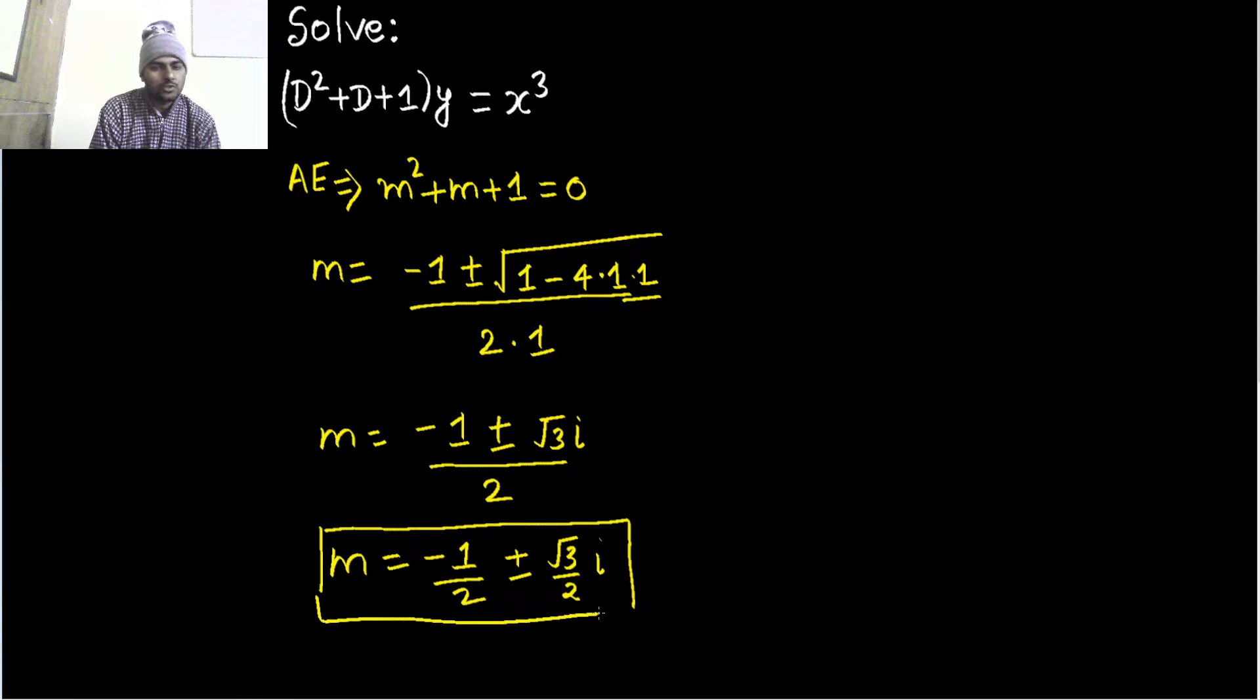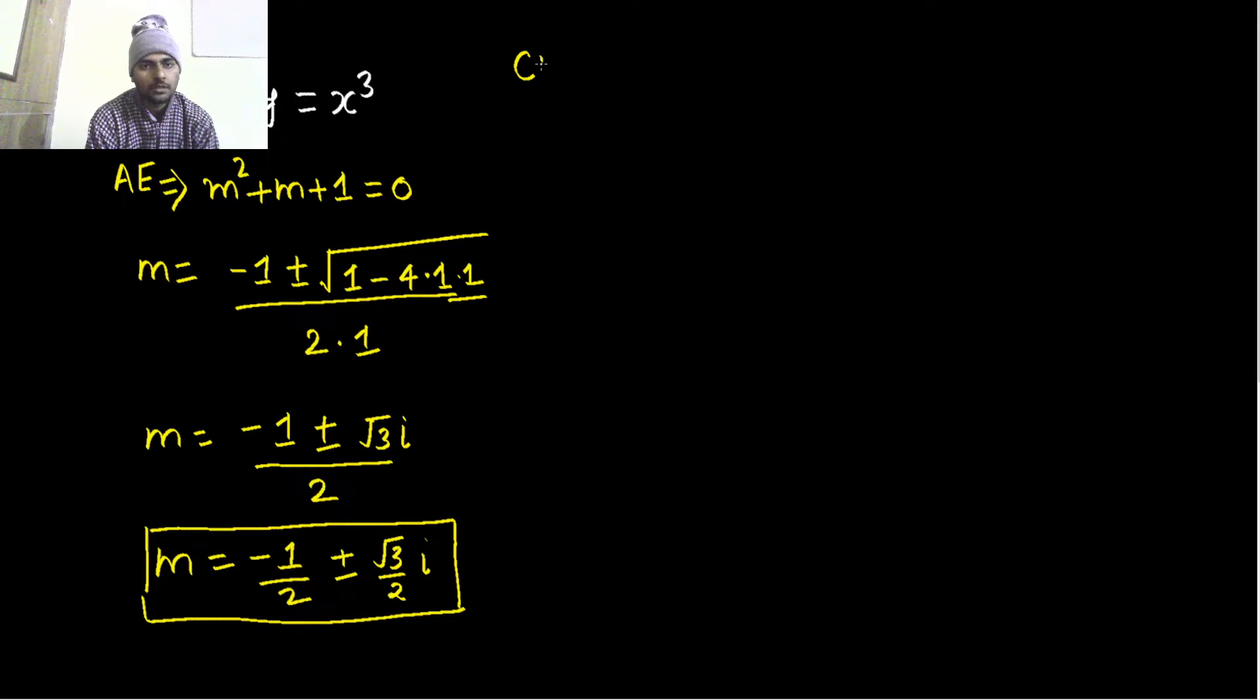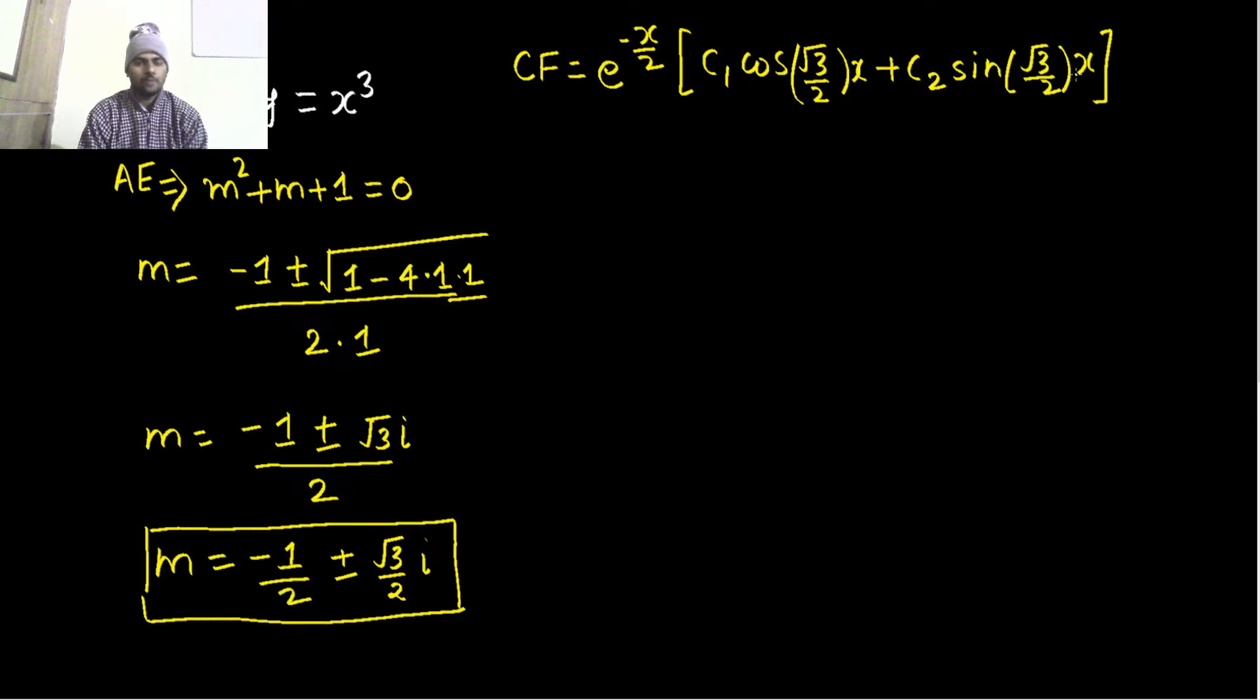Because it is a complex root, we know how to write complementary function in case of complex roots. This is your a, minus half is your a and root 3 by 2 is your b. So e^(ax), so minus x by 2, times c₁ cos(bx) plus c₂ sin(bx). Complementary function done.